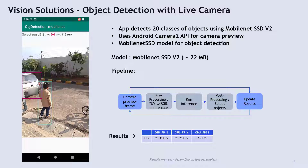The first vision solution is object detection with live camera. Here, the application detects around 20 categories of objects. It uses Android Camera2 API to get the camera preview stream, and uses MobileNet SSD2 model for object detection. The pipeline is to get the camera preview frame, then do pre-processing from YUV to RGB data. The pre-processed frame is given to the model. The model output is post-processed, which involves drawing bounding boxes on the frame, and the results are updated on the screen.